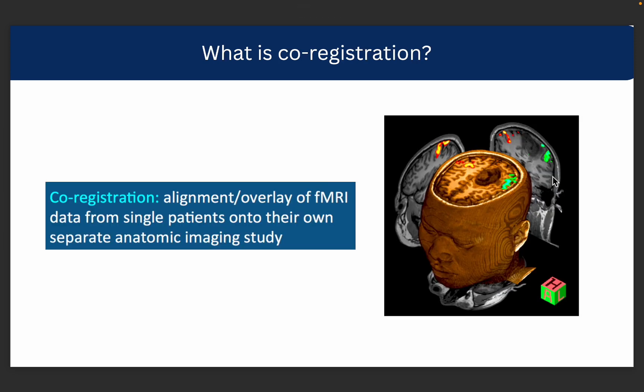So what is co-registration? Co-registration basically allows us to align two or more MRIs of the same patient. It is different from normalization because in normalization we align all the MRIs in the dataset to a standard format. But in co-registration we focus on one patient only and make sure that all the different modalities of that patient are properly aligned.